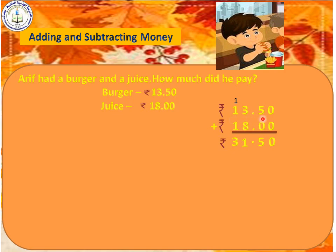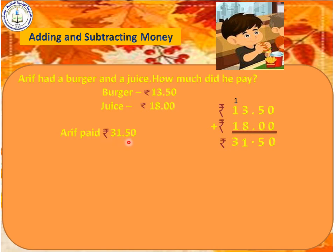We write 13.50 Paise. Then 18 rupees — after the point we write 00 Paise. Adding: 0 plus 0 is 0, 5 plus 0 is 5. Keep the decimal points in a straight line. 3 plus 8 is 11 — write 1 and carry 1. 1 plus 1 is 2, 2 plus 1 is 3. So he paid rupees 31 and 50 Paise.